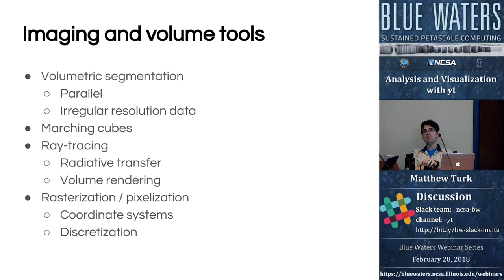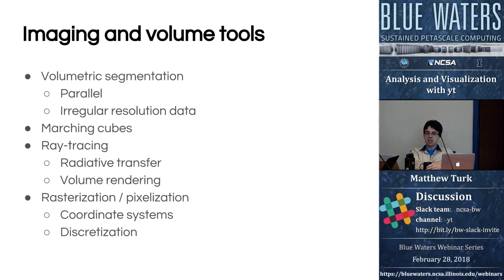This provides the opportunity to develop imaging and volumetric tools — doing volumetric segmentation, both in parallel and with irregular-resolution data, including identifying topologically connected sets within irregularly spaced and shaped data. We can also do marching cubes, and ray tracing for both radiative transfer and volume rendering. Our principal ray tracing engine is a software ray tracer, though we also have recent developments into hardware-accelerated ray tracers.